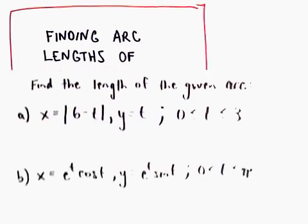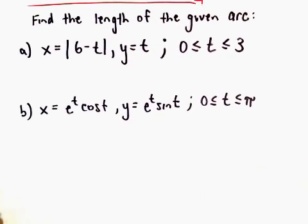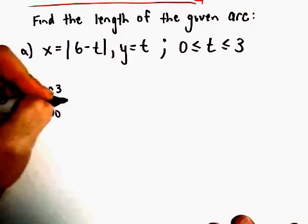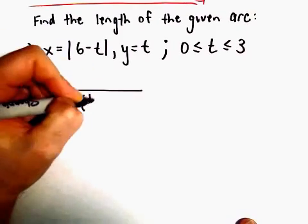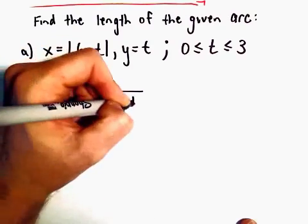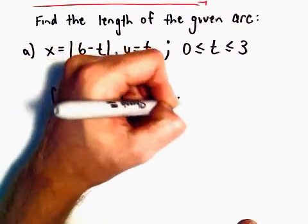In this video we're going to look at finding some arc lengths of parametric curves. In part A we've got the absolute value of 6 minus t equals x, and y equals t. We're going to evaluate this from 0 to 3. So we'll integrate from 0 to 3 the square root of the derivative of x with respect to t squared, plus the derivative of y with respect to t squared, dt.